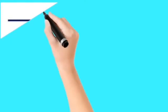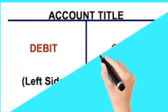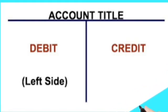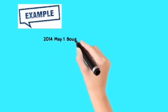To record transactions using the double entry rule, we prepare ledger accounts or T-accounts. At the top of the accounts is the title. The right-hand side of the account is the credit side, used to record anything going out of the business, while the left-hand side is the debit side, used to record anything coming into the business.